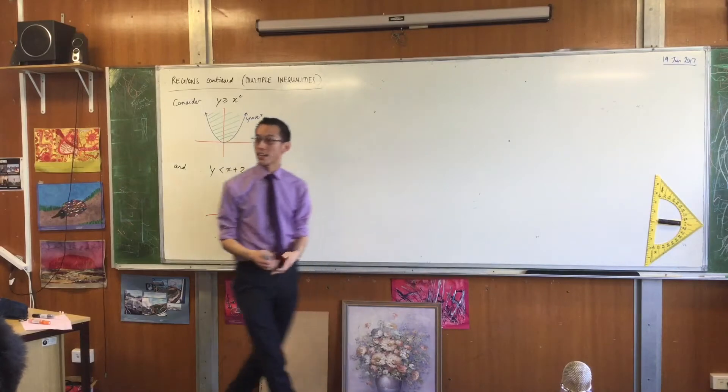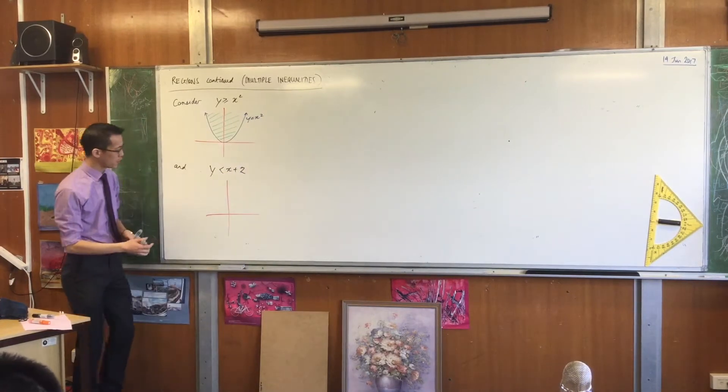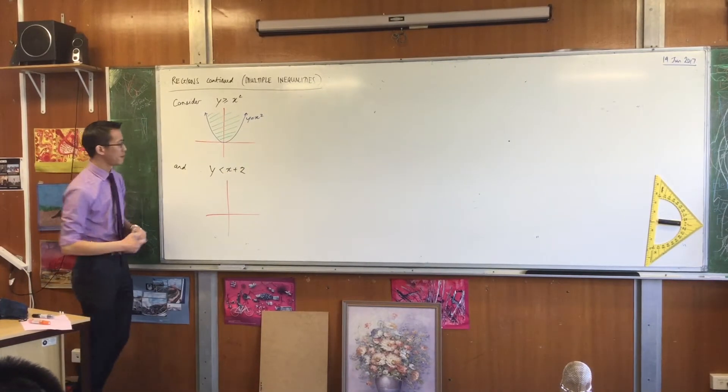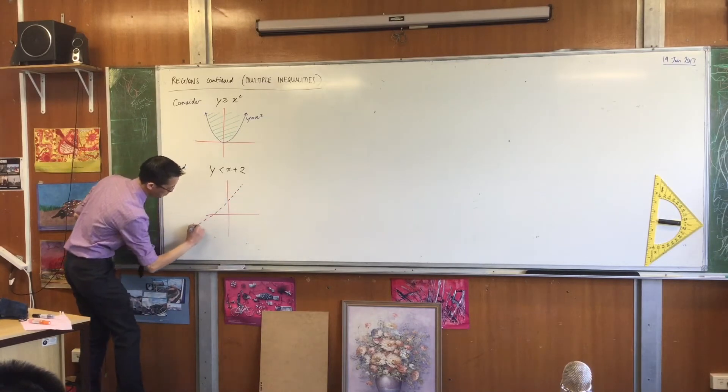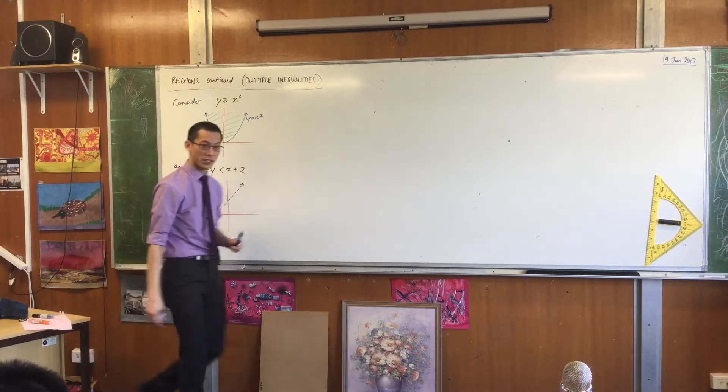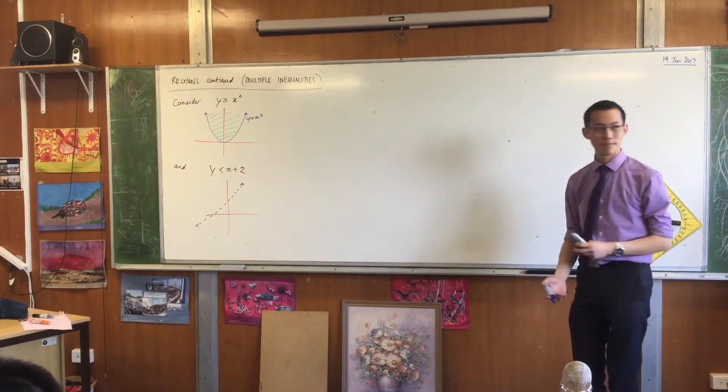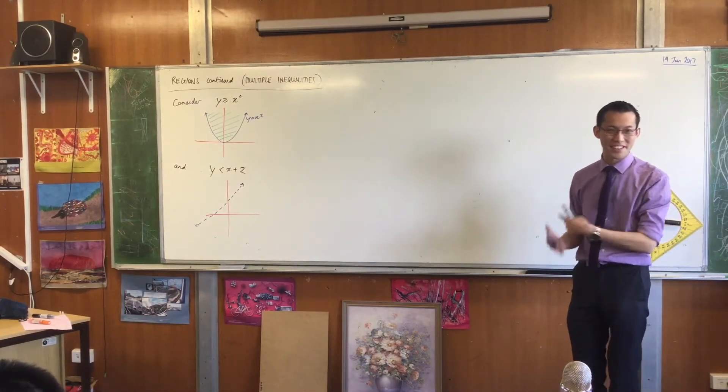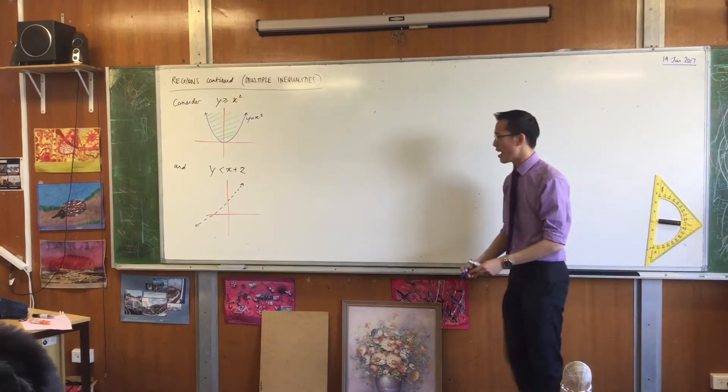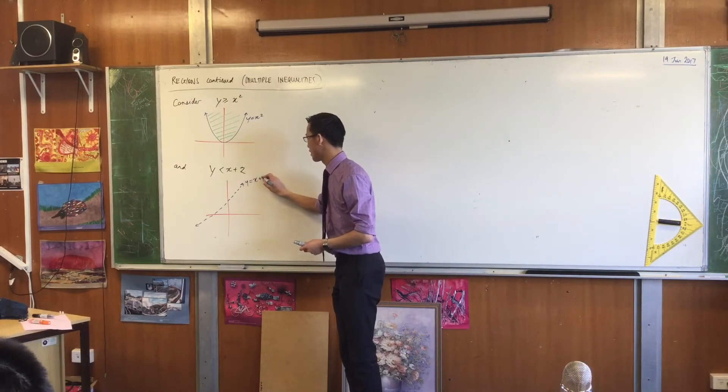So this green shaded section here, every single point in there satisfies the inequality. Y is greater than or equal to x squared. So far, so good. Y is less than x plus 2. This is easier than the one before. I'm going to draw a straight line as my boundary, x plus 2. You've noticed I've dotted because in this case, y is less than, so it's not inclusive of the boundary.